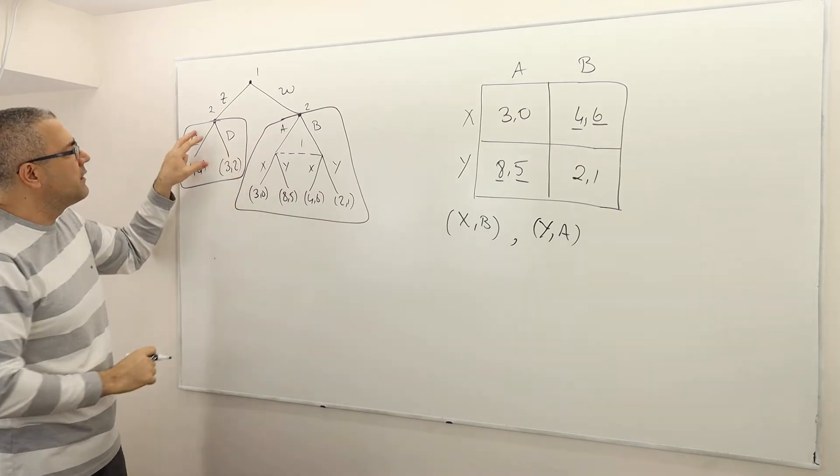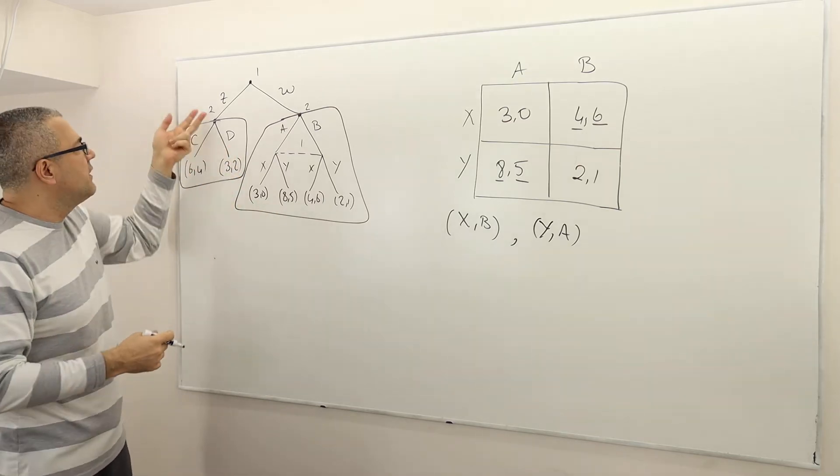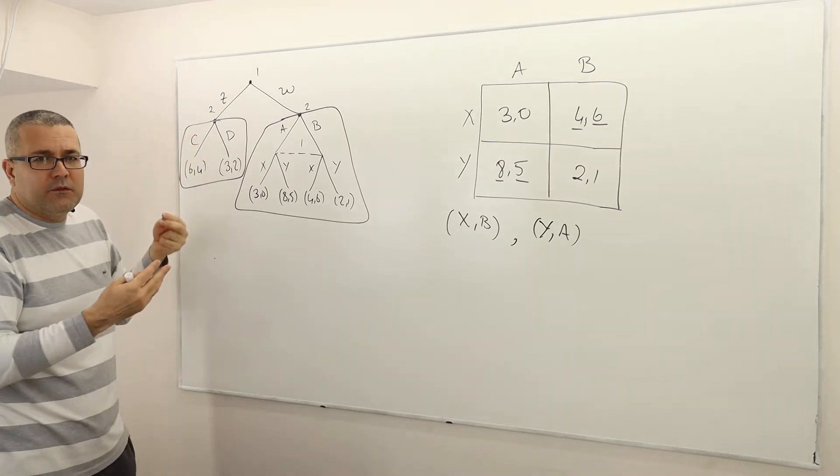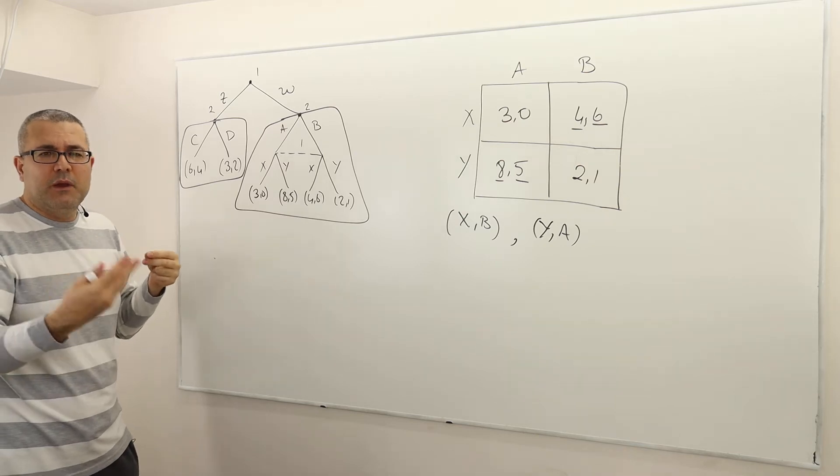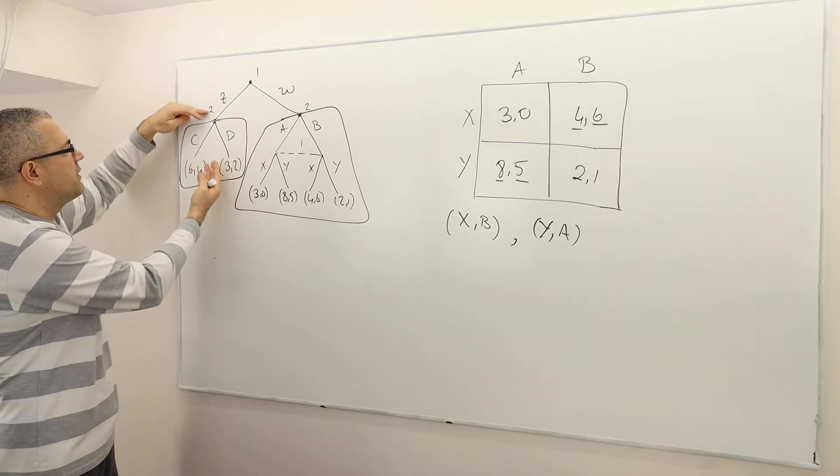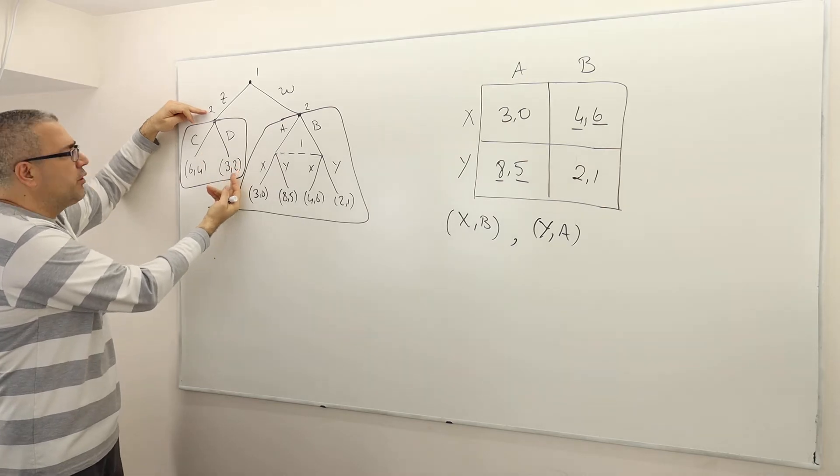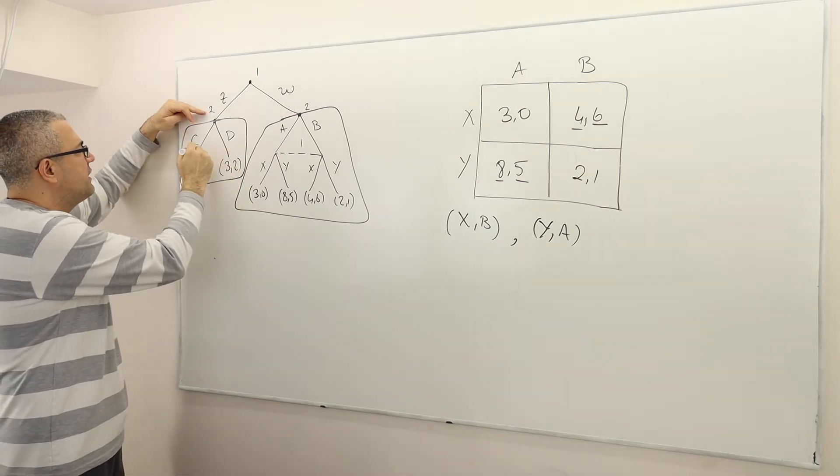Well, what about this part? Well, this is not a simultaneous move game. Player 2 moves alone. So therefore, you have to find the optimal strategies by using backward induction. What is the optimal strategy for player 2? Is it C or D? Well, D is going to bring him two payoffs, so therefore C is optimal.